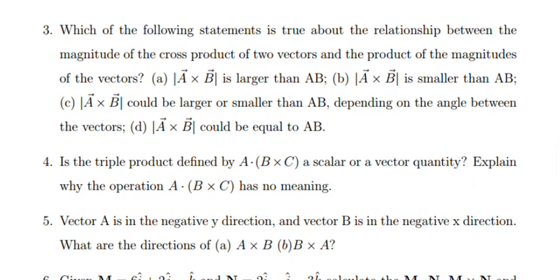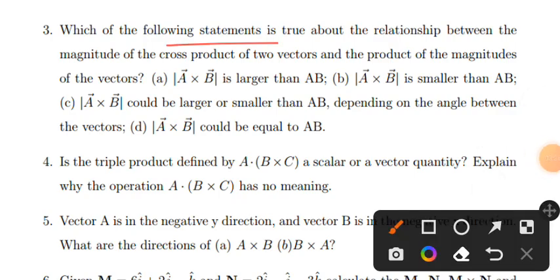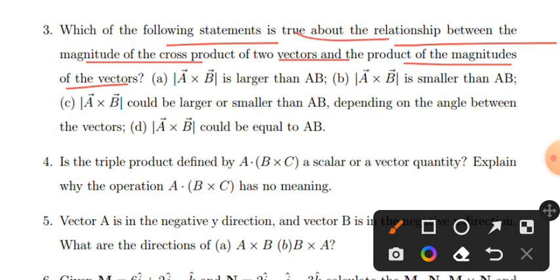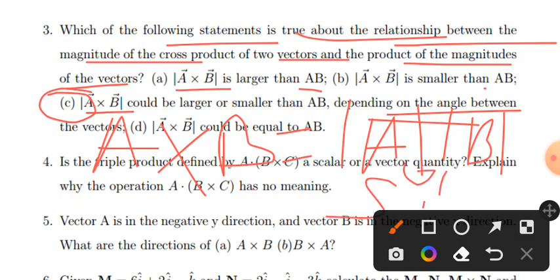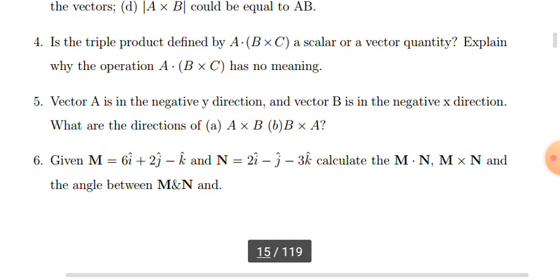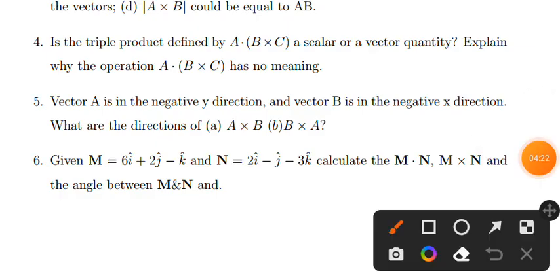Which statement is true about the relationship between the magnitude of the cross product of two vectors and the product of the magnitude of the vectors? Magnitude of A×B equals magnitude of A times magnitude of B times sin(theta). This depends on the angle, so it depends on sin(theta).